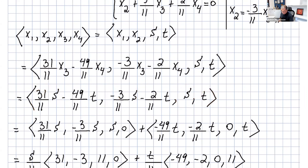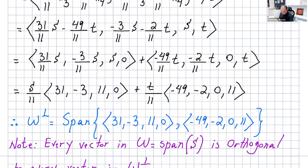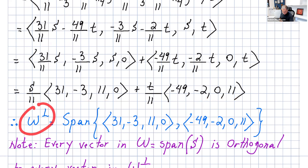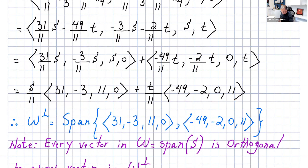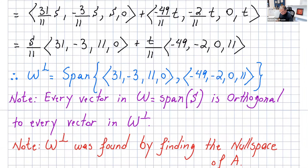Writing x1, x2, x3, x4 in terms of s and t, substituting the expressions for x1 and x2, and separating s and t terms, we get: the s-component is (31/11, -3/11, 1, 0) and the t-component is (-49/11, -2/11, 0, 1). Factoring out 1/11 to clear fractions, w-perp is the span of (31, -3, 11, 0) and (-49, -2, 0, 11). Any linear combination of these two vectors is orthogonal to every vector in w.